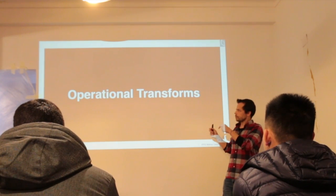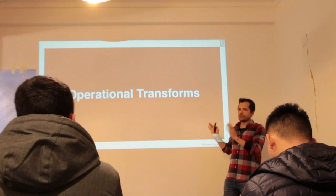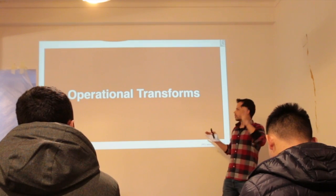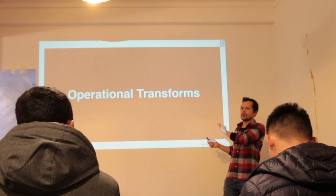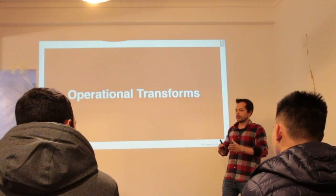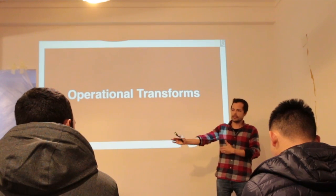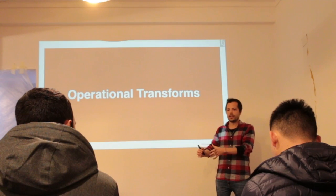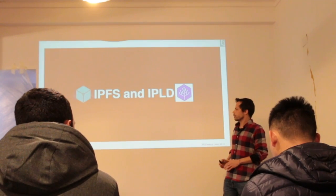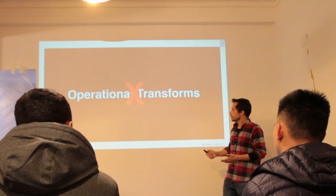Google Docs implements something that addresses this more or less, which is called operational transforms. They don't fill all the ticks on that list though — it's centralized, it requires some centralization of coordination. It has to know the state of the clients in order to order the operations in the right way so that everyone sees the same thing at the end. This doesn't work for us because it's centralized and doesn't allow for the offline-first use case.